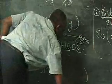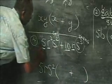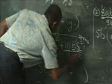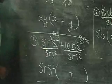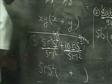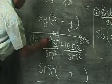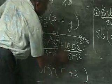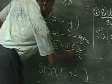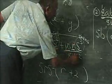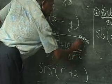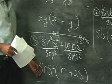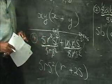We divide both terms by 5RS squared. For the first term: the 5s cancel, S squared cancels, and R squared divided by R leaves R. For the second term: 10 divided by 5 is 2, the Rs cancel, and S cubed divided by S squared leaves S. So we have 2S. The final answer is 5RS squared times open bracket R plus 2S close bracket.